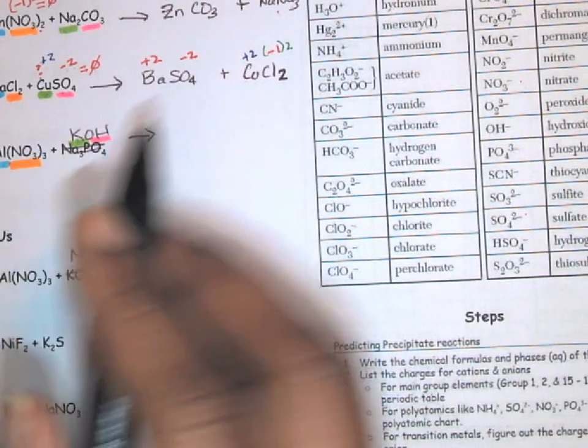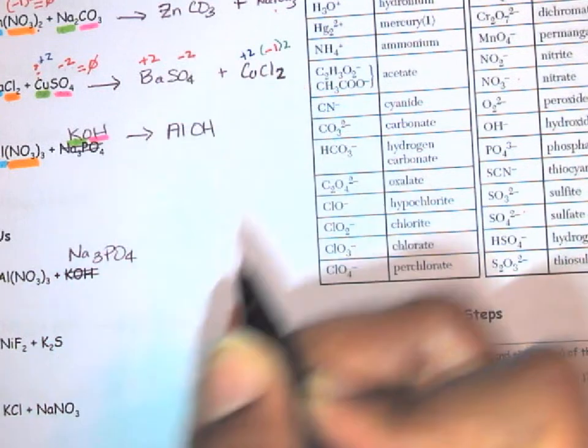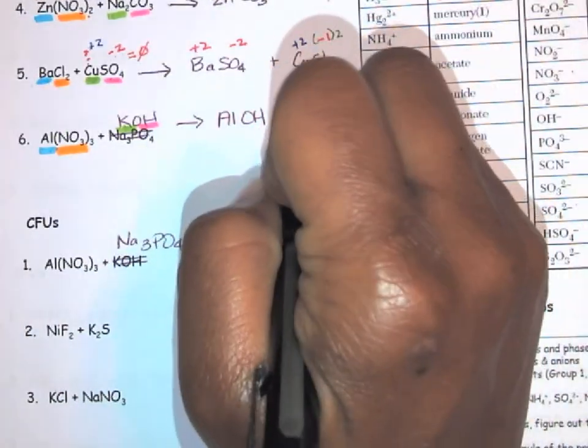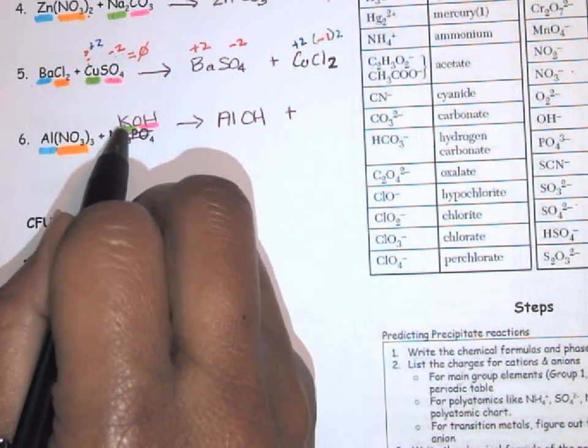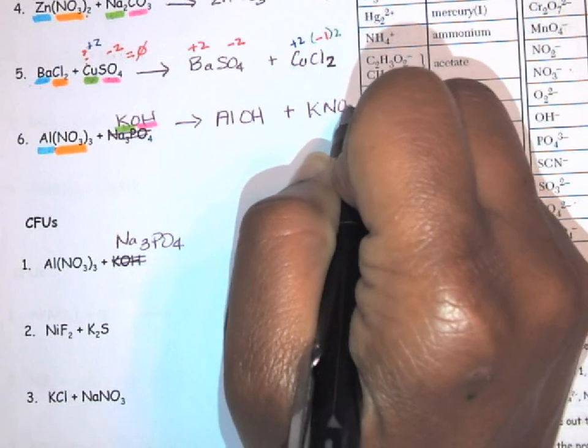All right, so now I'm going to go ahead and switch them. Switch the first and the last: Al OH. I'm leaving myself a little bit of room in between them just because I need to know if this is the correct formula or not. Then switch the inner ones, writing the potassium first of course: K NO3, giving myself a little room there.